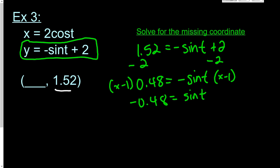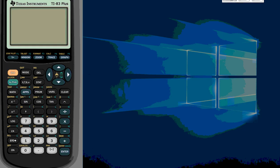And then lastly, to get t by itself, I'm going to do the inverse sine of both sides. So it would be the inverse sine of negative 0.48 equals t. So this one, I'm definitely going to need a calculator. I don't know what the inverse sine of negative 0.48 is, so I'm going to pull up my calculator here.